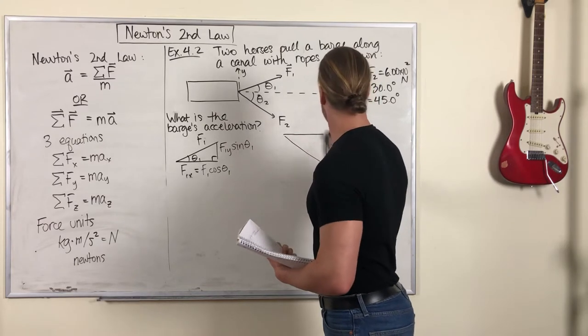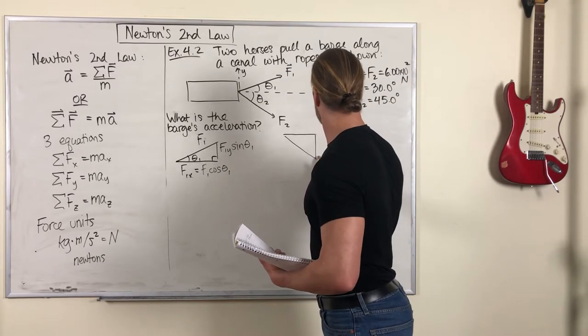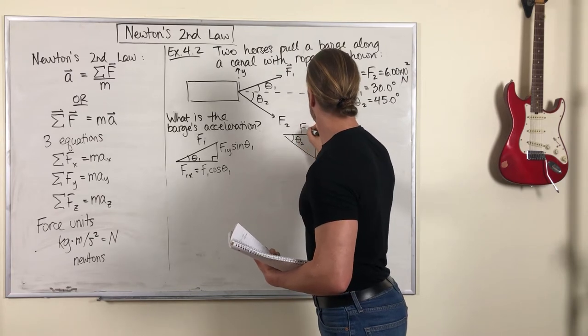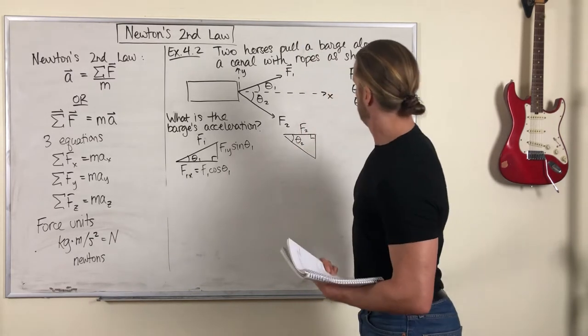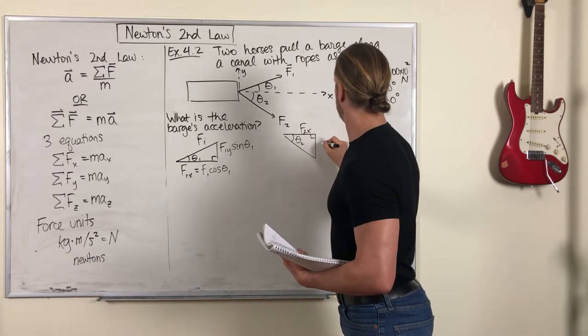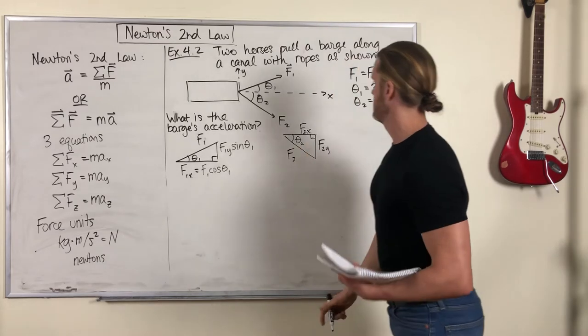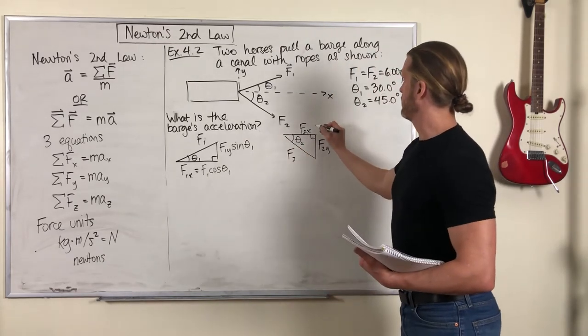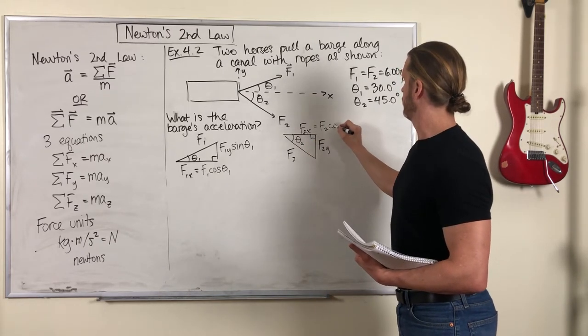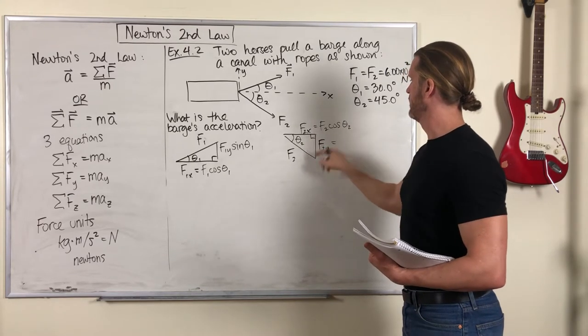F2, which is not drawn to scale, but you get the idea. F2x, that's F2x, that's F2y. The X component is adjacent so it gets cosine theta 2. F2y is opposite.